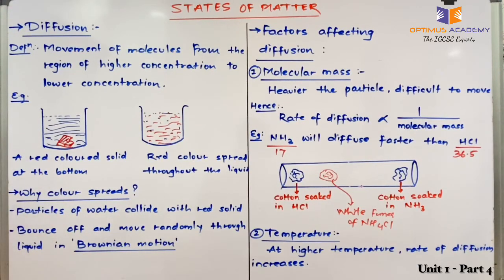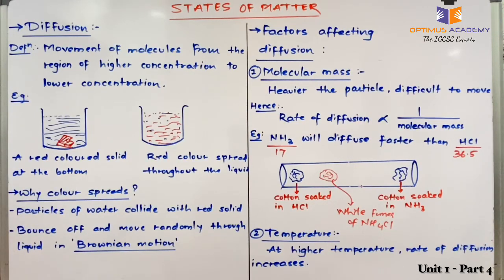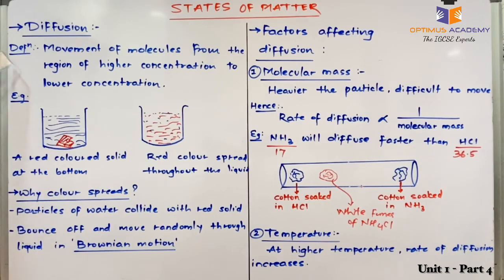In this video on states of matter, we are going to discuss an important phenomenon — diffusion. Before explaining what diffusion is, let us discuss some day-to-day examples. Suppose someone in your house sprays a perfume in one room — you can still smell the fragrance sitting at the other end of the house. Similarly, when your mom is cooking food in the kitchen, you can smell it from another room. How does the smell reach from the kitchen to your room? This depends on the phenomenon known as diffusion.